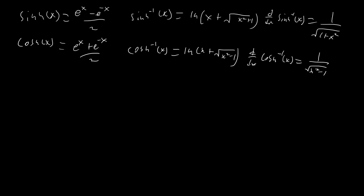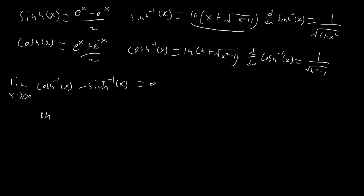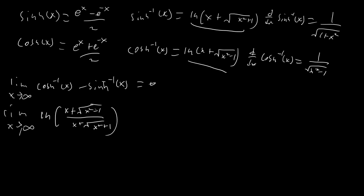The other thing we need before we start are some quick limits and formulas. We want to show that the limit as x → ∞ of cosh⁻¹(x) − sinh⁻¹(x) equals 0. This is easy to show by combining the two natural logarithms, ending up with ln((x + √(x²−1)) / (x + √(x²+1))). Dividing top and bottom by x and taking the limit gives ln(1) = 0.